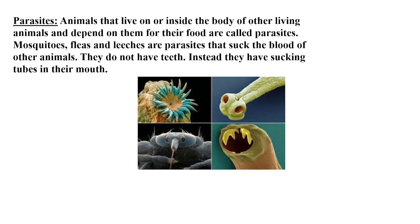Another type of animal is the parasite. Parasites either live on the body of another living organism or inside it, depending on them for food. Parasites like mosquitoes, fleas, and leeches live on the body of animals and have sucking tubes in their mouths to suck blood from their host. Internal parasites like tapeworms and roundworms also have special sucking parts to absorb blood from inside the host's body.